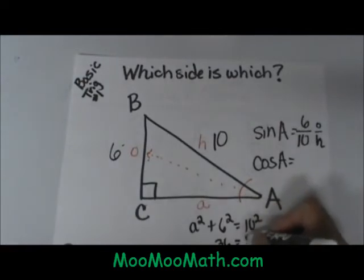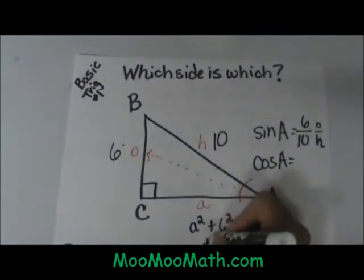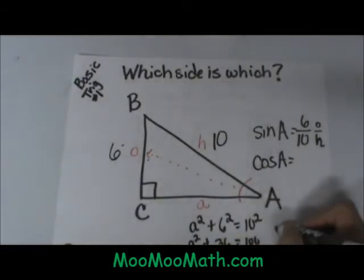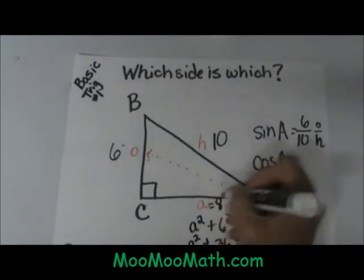So 36 plus A squared equals 100. So A squared equals 64, and A must be the length of 8. So I have now solved for A.